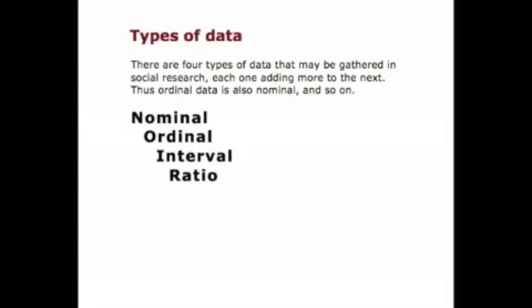Out of ordinal, we find some that qualify to be interval, and out of interval, we find some to be ratio. Imagine that all data are nominal, and then we move forward through the definitions to more carefully explain what the data look like. For instance, all people are human beings, but some human beings live in the United States, some in Texas, and some are fortunate enough to attend Texas A&M University Commerce.